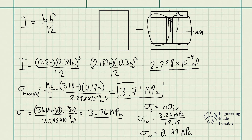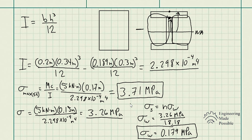The maximum bending stress for the wood material is 0.179 MPa. When designing, you ensure the stress in the wood does not exceed its maximum allowable stress, and the steel stress does not exceed its yield stress. In summary: transform the composite beam into one equivalent beam using the stronger material, get equivalent dimensions, apply the bending stress equation, then transform back to find the stress in the weak material.